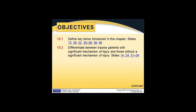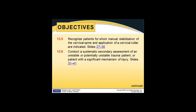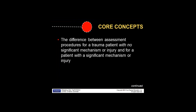We have a few objectives to cover in this chapter. We have a multimedia video that shows you a little bit about multi-system trauma patients - you can get to that from your non-recorded lecture or PowerPoint. The core concept is to look at the difference between assessment procedures for a trauma patient with no significant mechanism of injury versus a patient with significant mechanism of injury.